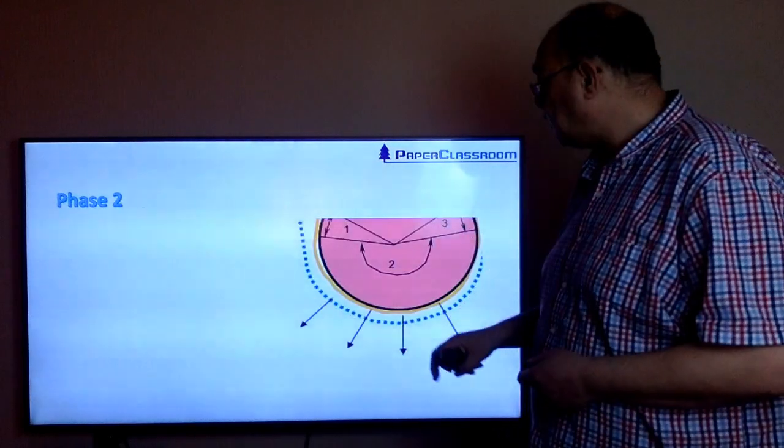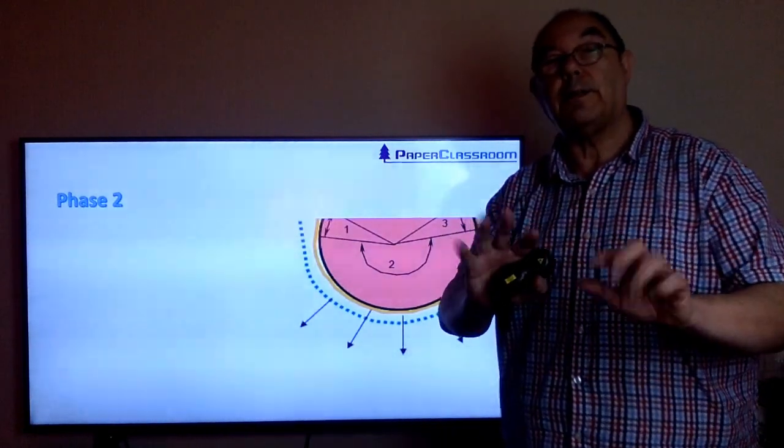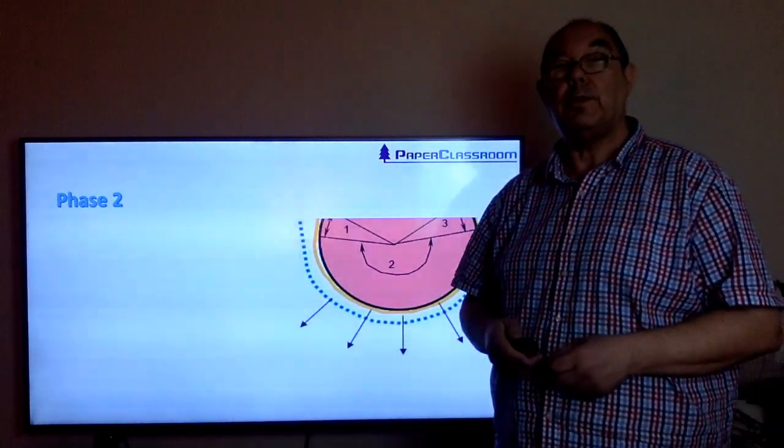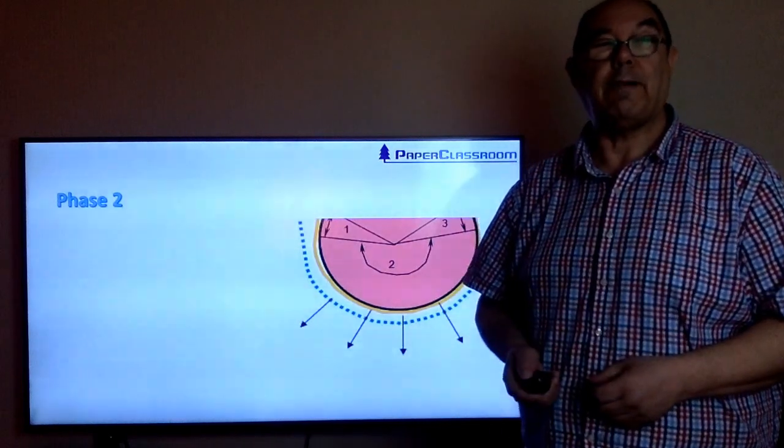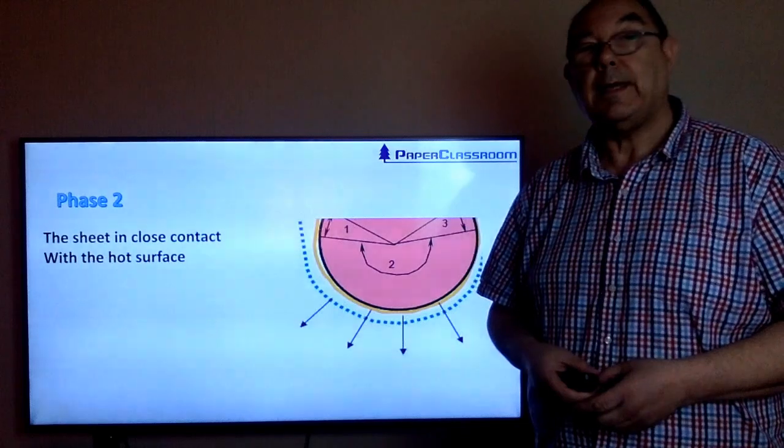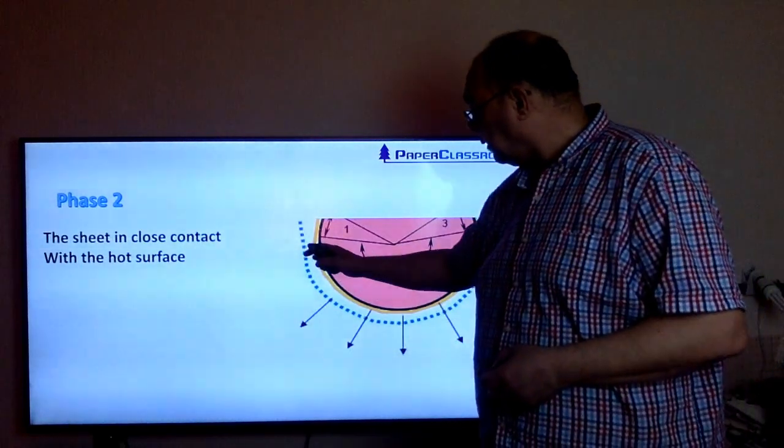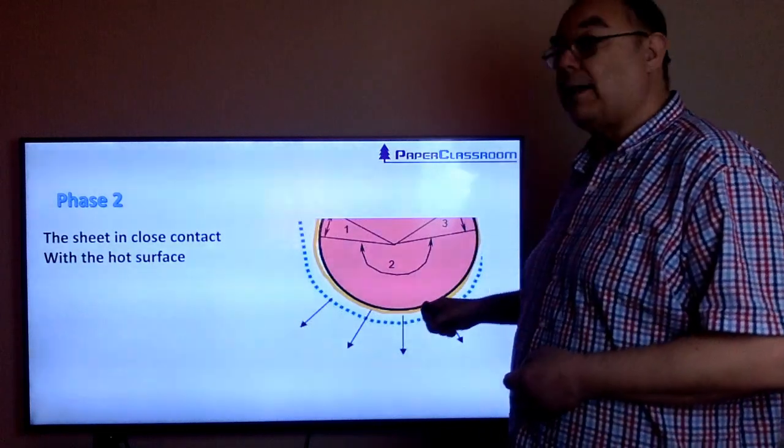Moving along to phase two, this is the largest area. This is where the sheet is being held in close contact with the drying cylinder by the dry fabric. The main thing that happens here is the sheet gets heated.